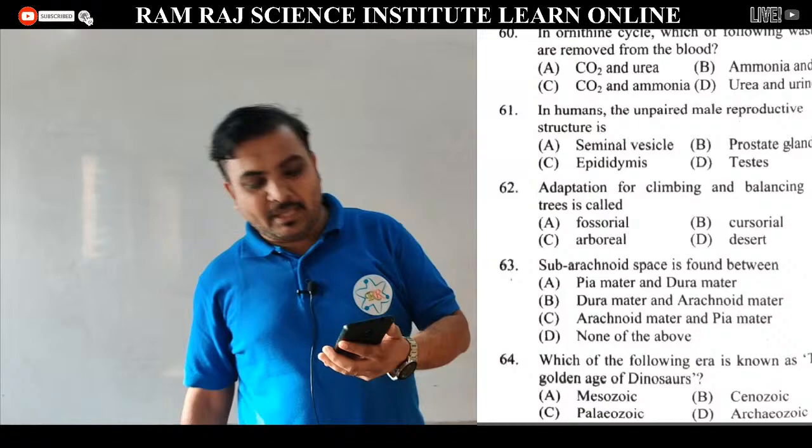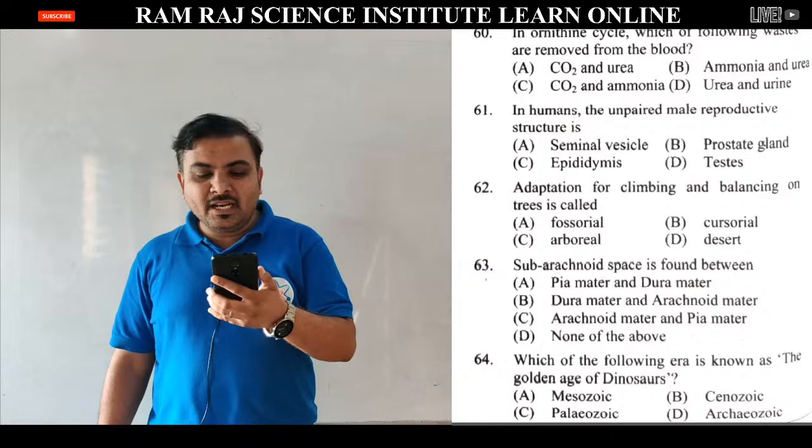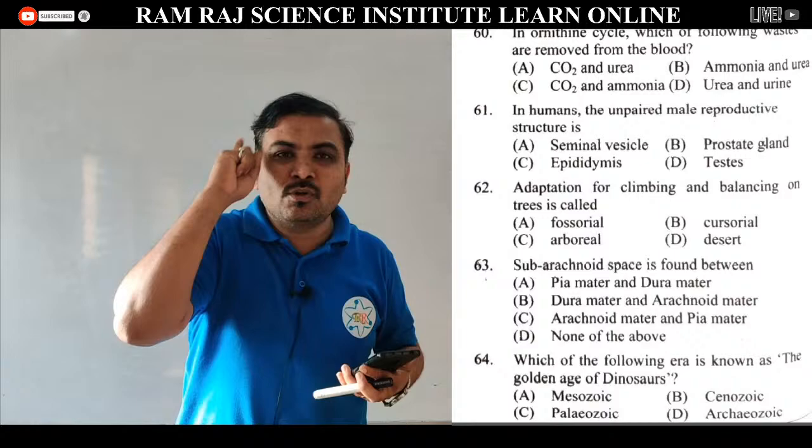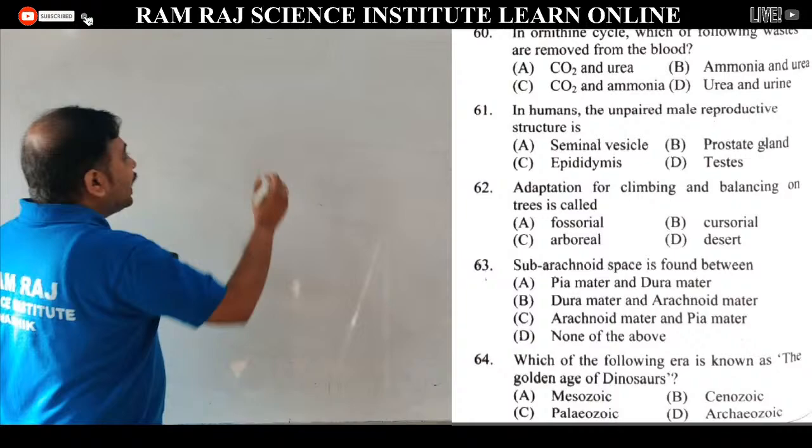Screen के उपर आपको question दिख रहा है. 60 तक हमने कल solve कर लिया था. अगला question number 61 है: in humans, the unpaired male reproductive structure is. आपकी human male reproductive system में कौन सा structure unpaired है, ये इस question में ढूंडना है. Unpaired मतलब वो singly present है.